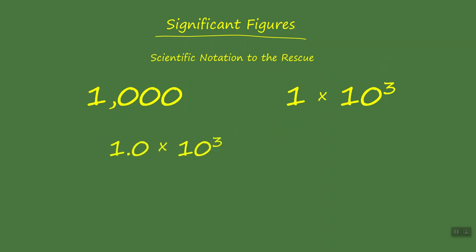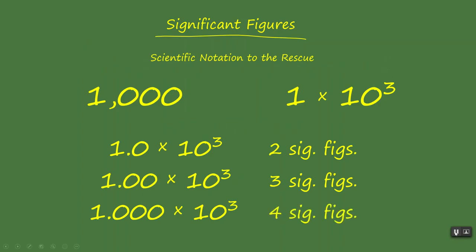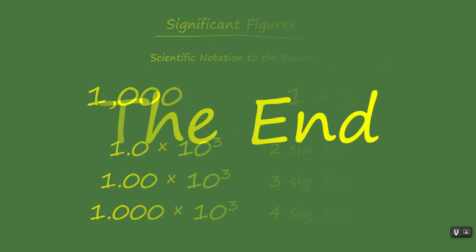For example, 1.0 × 10³ is still equivalent to 1,000, but because the coefficient has a decimal point, the zero becomes significant — we've now reported 1,000 with two significant figures. With 1.00 × 10³, both zeros are significant, so we've reported 1,000 with three significant figures. And with 1.000 × 10³, all three zeros are significant, giving four significant figures — we've reported 1,000 with four significant figures.